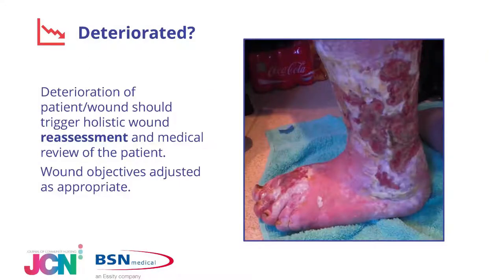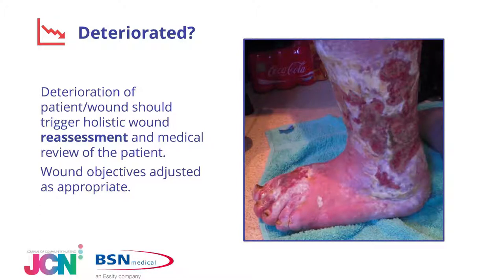If we describe the wound as deteriorating, that would certainly trigger a holistic reassessment of the patient and the wound, triggering key clinical actions such as a medical review. For example, a patient with a very oedematous limb, extensive circumferential wound, oedematous foot with extensive maceration of the peri-wound edges — you can imagine how painful and debilitating that is for the patient, with the wound constantly leaking, soiling clothing, unable to wear appropriate footwear, and significant pain. Holistic reassessment of the patient is required to review and implement a new treatment regime.